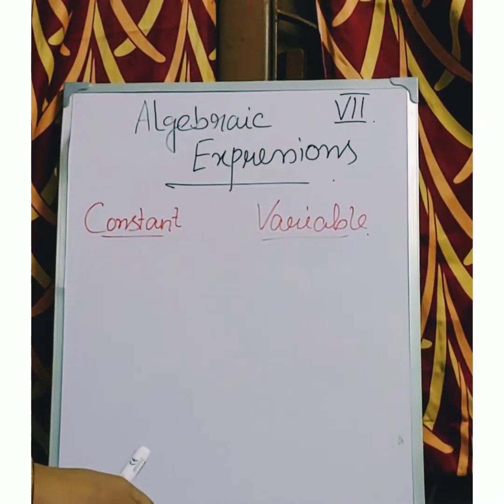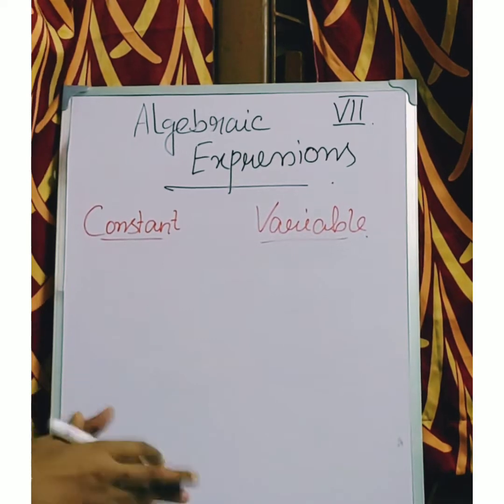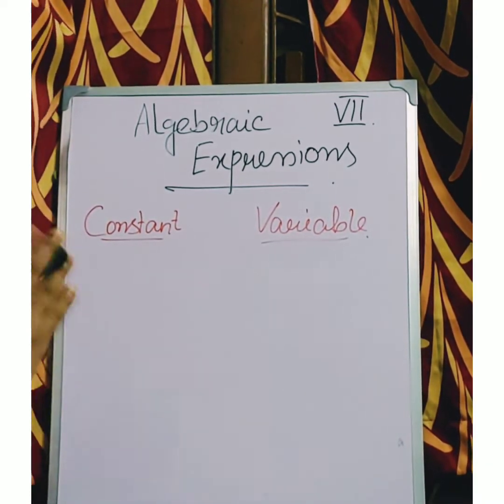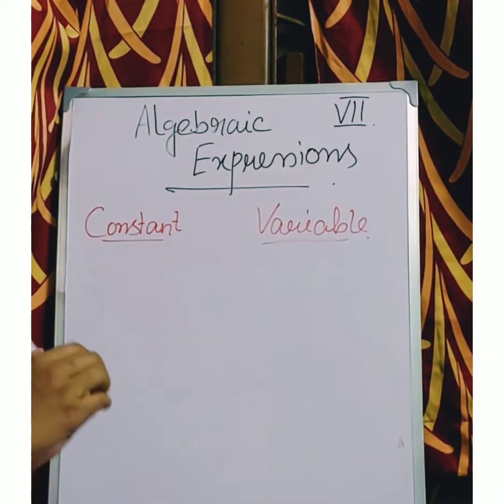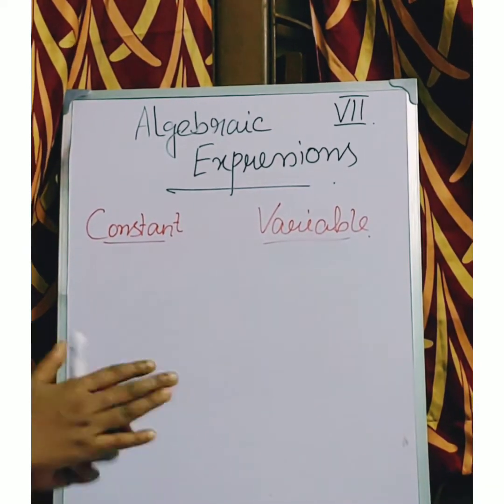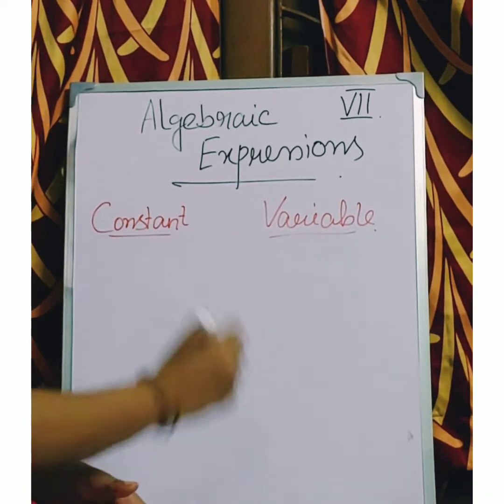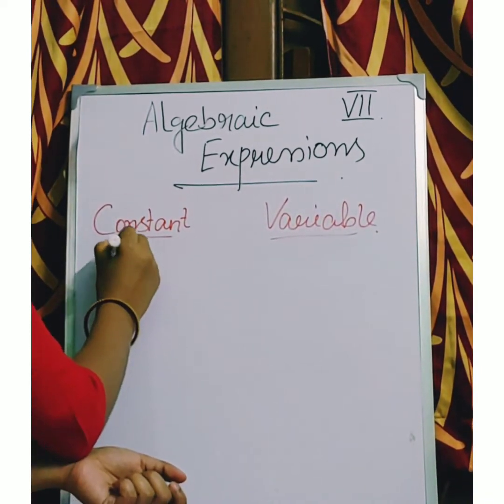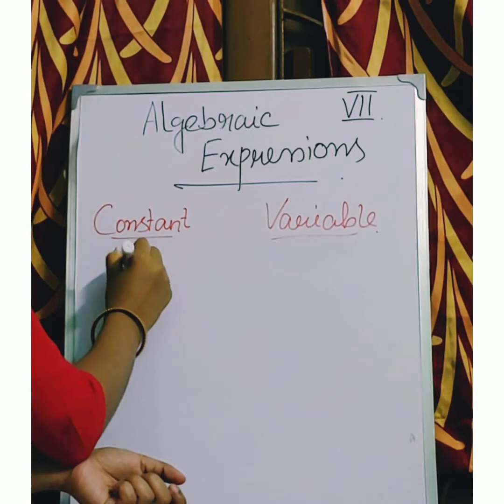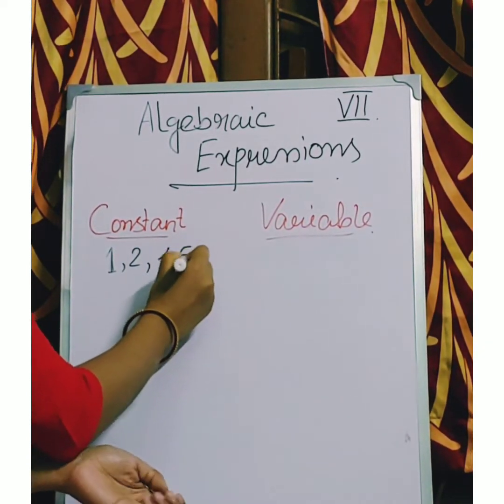Now what is constant and what is variable? I hope you know what is constant. Constant means which does not change in any condition. Now in algebra, constant are the numerals, like 1, 2, 4, 5.